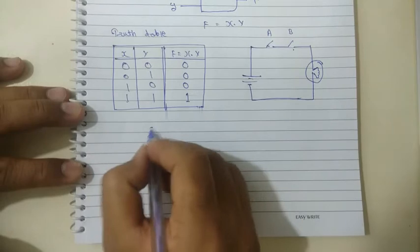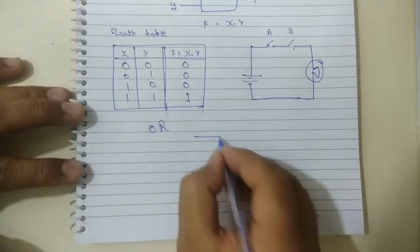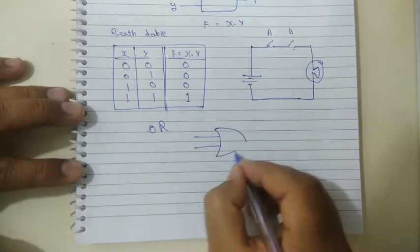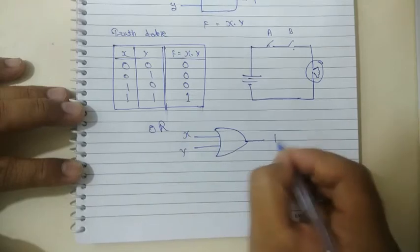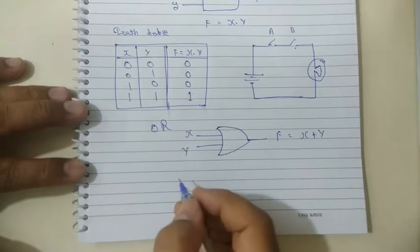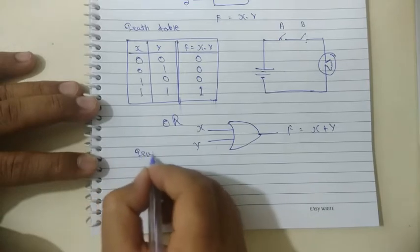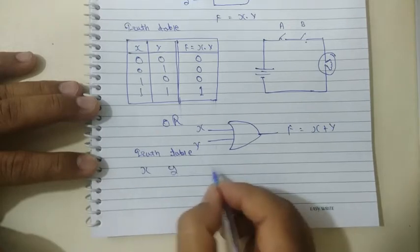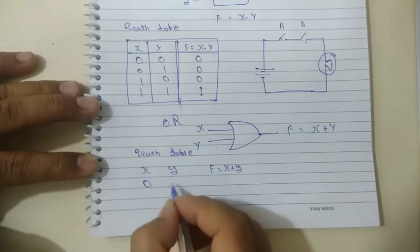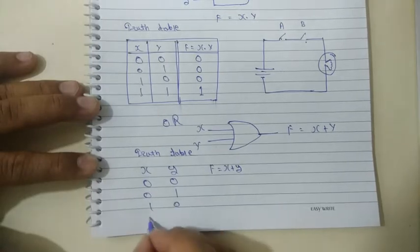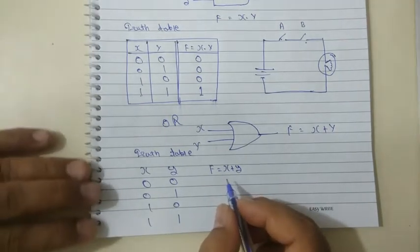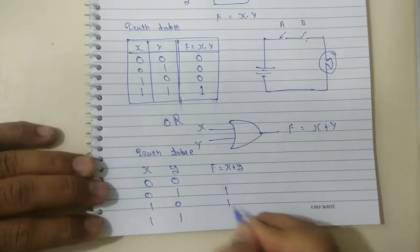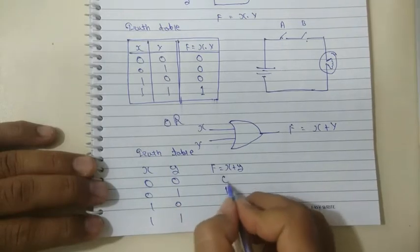Next, the OR gate. The symbol of the OR gate has inputs X and Y, and output F is X plus Y. For the truth table, output F equals X plus Y. The output is 1 when any one input is 1 — either X or Y is 1, the output will be 1. When both inputs are 0, the output will be 0.